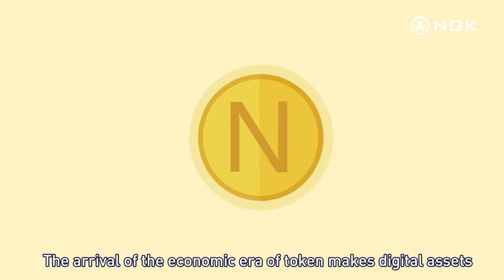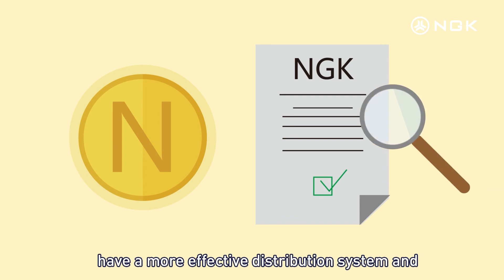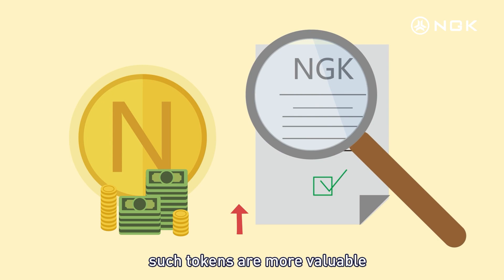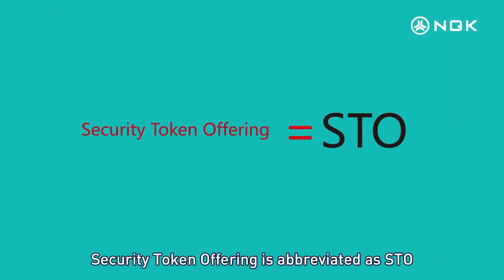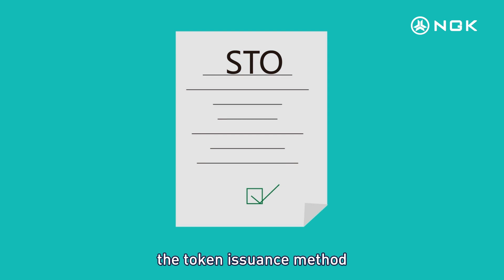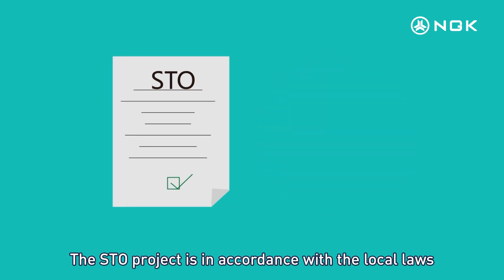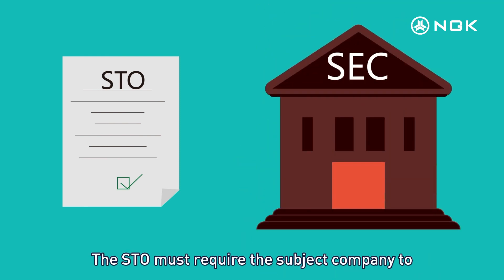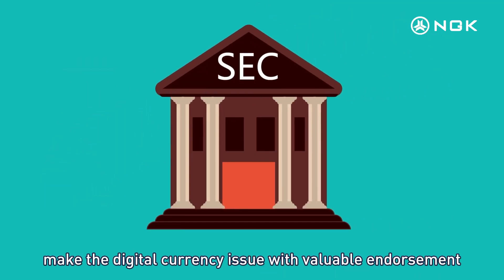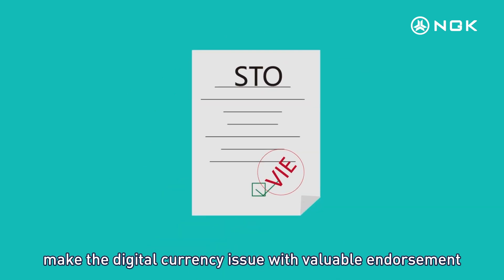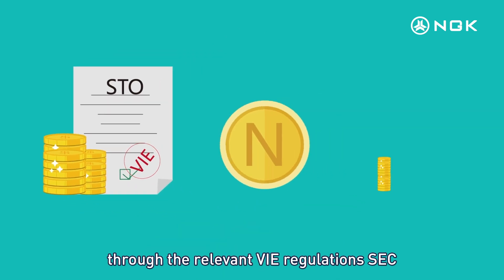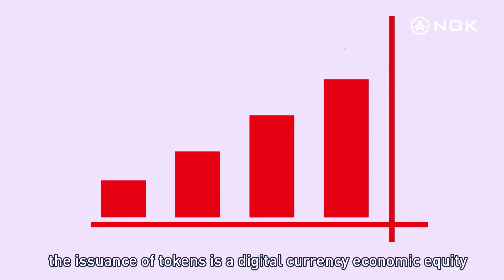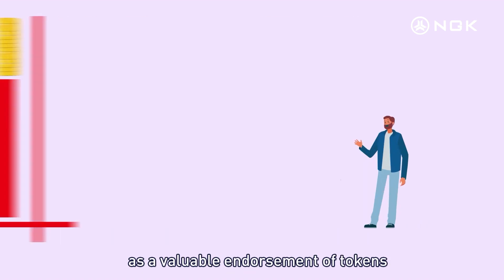Digital currency enthusiasts in the market could not tell the true from the false. The arrival of the token economic era gives digital assets a more effective distribution system and higher-level supervision. Security Token Offering, abbreviated as STO, is a token issuance method where the project complies with local laws and regulations in the United States, requiring SEC VIE regulation compliance.